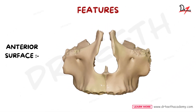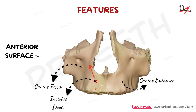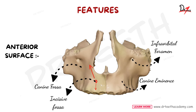Starting with the anterior surface, it directs forward and laterally and it presents the incisive fossa which gives origin to the depressor septi. Below the incisive fossa the incivus arises and superolateral to this fossa the nasalis muscle arises. This is the canine eminence and this is the canine fossa here which gives origin to levator anguli oris. Above the canine fossa, this is the infraorbital foramen which carries infraorbital nerves and vessels. Between the infraorbital margin and foramen, the levator labiae superioris arises. The nasal notch borders give origin to the nasalis and depressor septi.